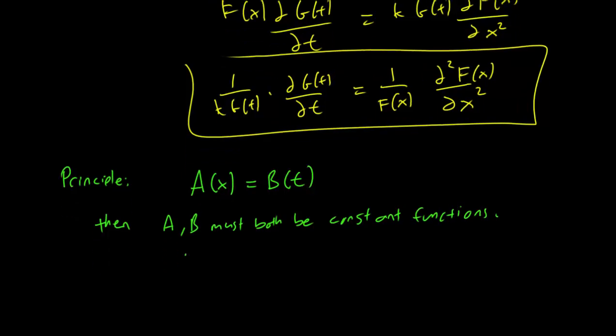Now here's the way to think about it. So in other words, we mean that A(x) is equal to B(t) is equal to constant. Here's the way to think about it. So on the left side, A(x) doesn't depend on time. On the right side, B(t) doesn't depend on space. But they're equal to each other, so the only way they can be equal is if neither of them depend on time or space.